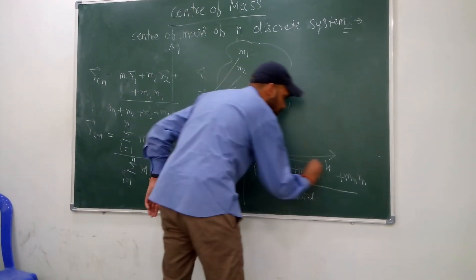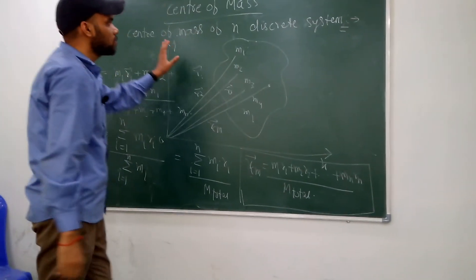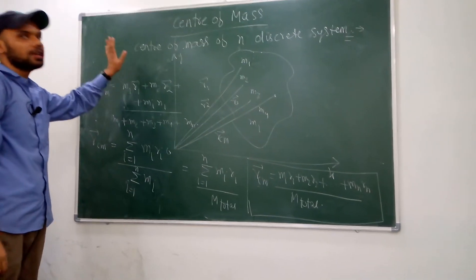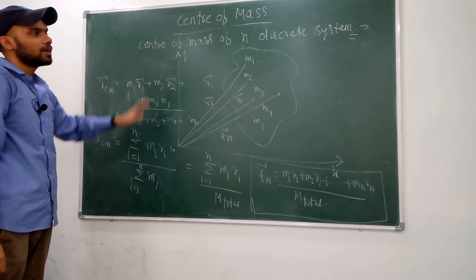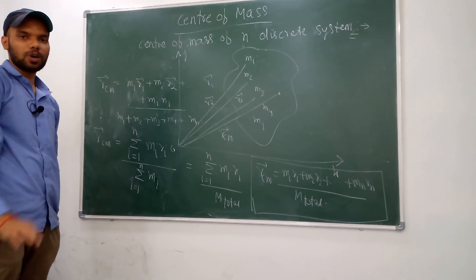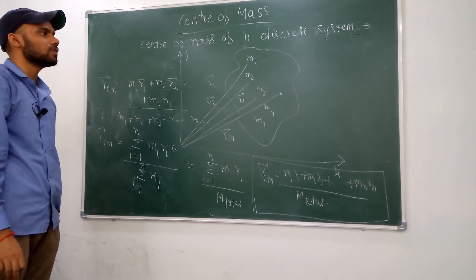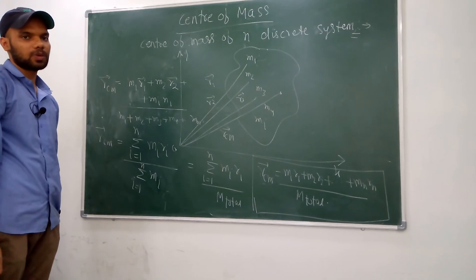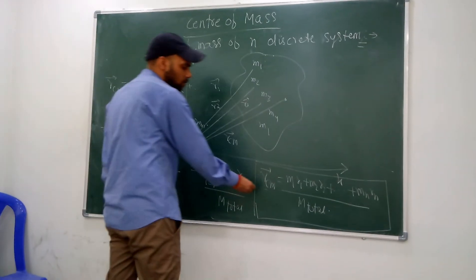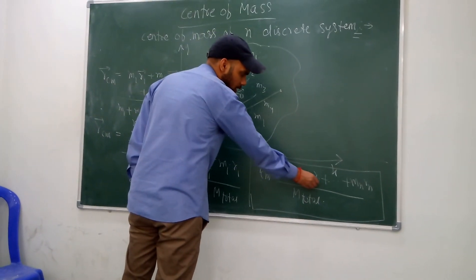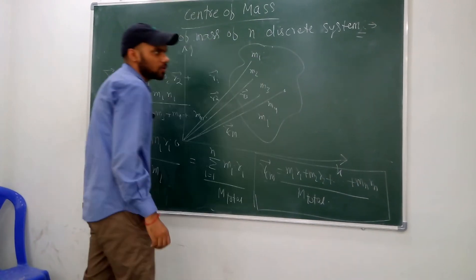This formula is very important for the N discrete mass system. We are now familiar with the center of mass: it is the point at which the whole mass is supposed to be concentrated, and if an external force is applied at the center of mass, that body will exhibit translational motion. The center of mass formula for an N discrete system is: RCM equals M1·R1 plus M2·R2 plus ... plus MN·RN, divided by M, the total mass of the system.